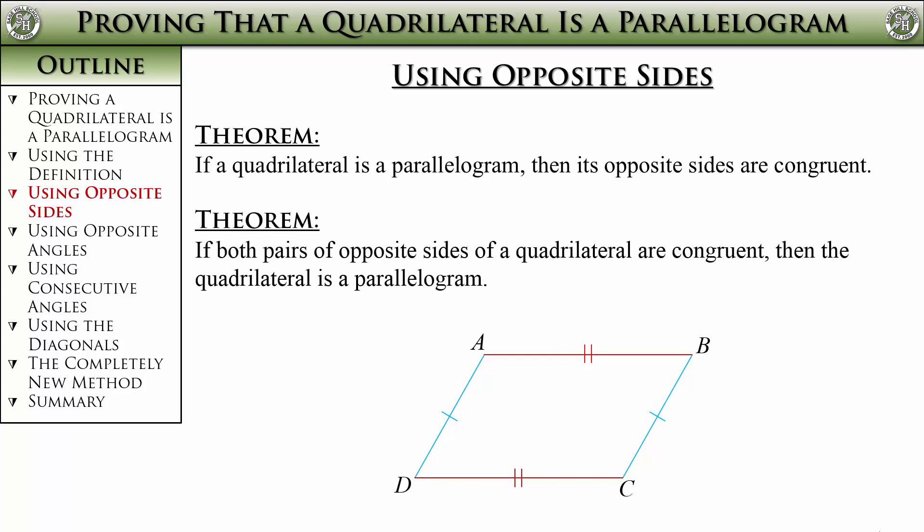I told you last time that these theorems didn't have official names, so you had to write them out in a proof. That's when we came up with abbreviations for them. Well, these converses also don't have official names, so they need abbreviations too. Fortunately, the abbreviations are simply the converses of the abbreviations we did last time. Once again, as long as you understood the last section, this should be easy.